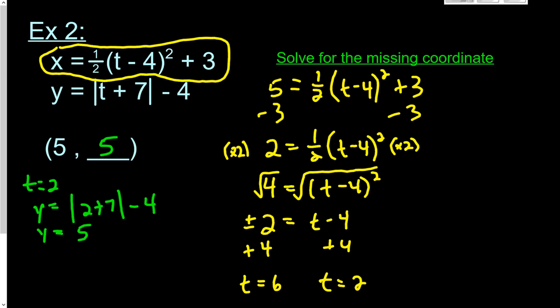The other time is when t equals 6. So it'll be y equals absolute value of 6 plus 7 minus 4. So it'll be y equals 13 minus 4, which is 9. So the other point would be 5 comma 9.